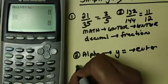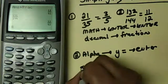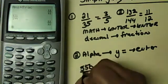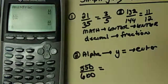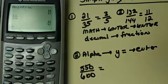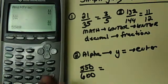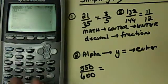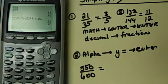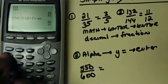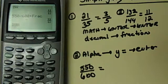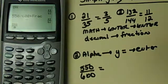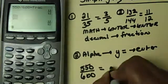So, let's say if I wanted to do 550 over 600. I'm quicker at just doing 550 over 600 math, enter, enter. See, that's quick for me. But if you want to use the menu, it's still alpha, y equals, and enter, then 550, and go down to 600. And then I wind up with 11 over 12.